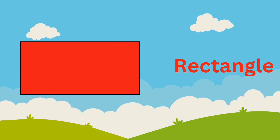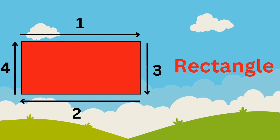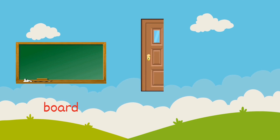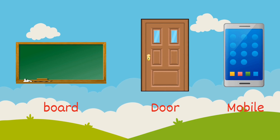Rectangle. A rectangle has four sides. Two opposite sides are of the same length, one pair being longer than the other. It has four corners. Let's see which objects we have in our surroundings which are rectangular in shape. Blackboard, door, mobile — they are rectangular in shape.